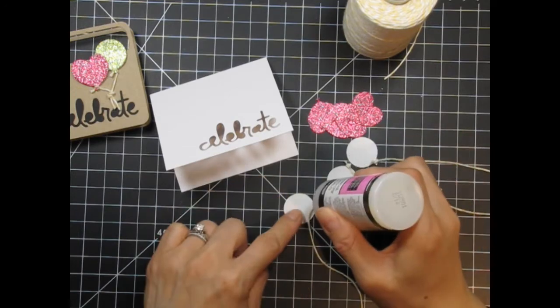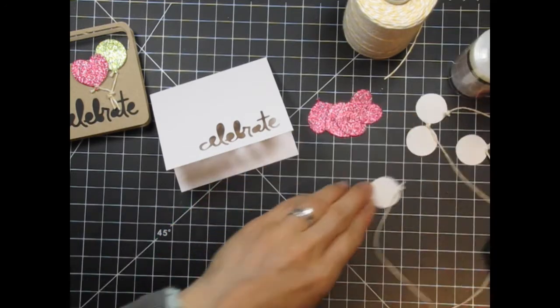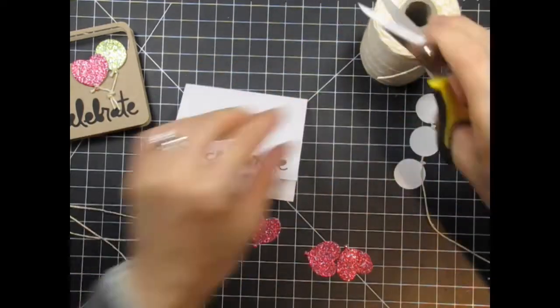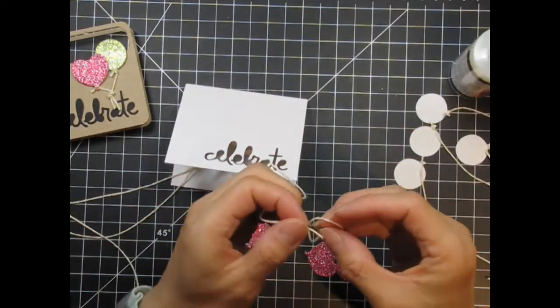As you can see, I'm applying that dab of glossy accents to each knot to secure it to the balloon. By the time I adhere these to the cards, they will still be wet enough to stick to the card base.